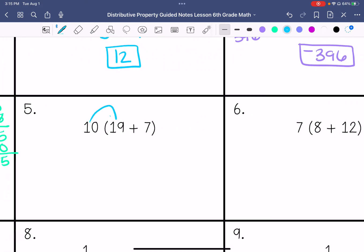10 times 19 is 190, and 10 times 7 is 70, so this would be 260.